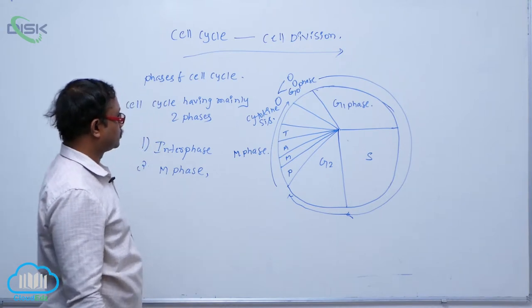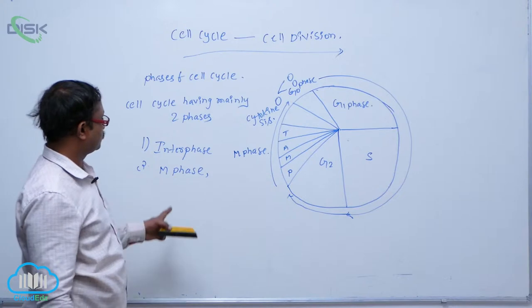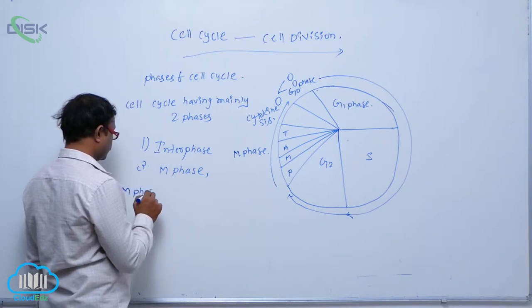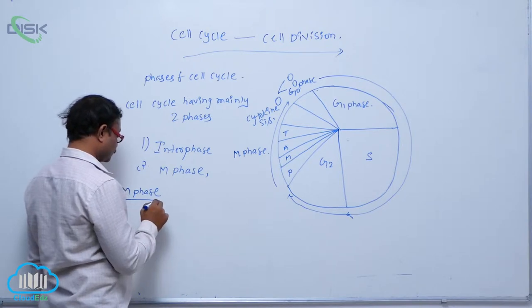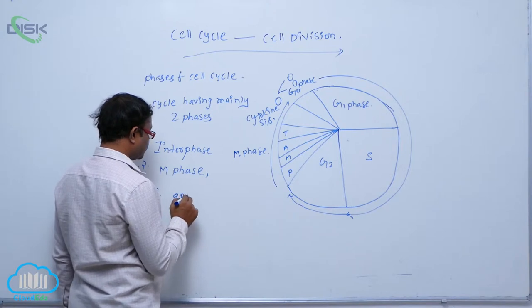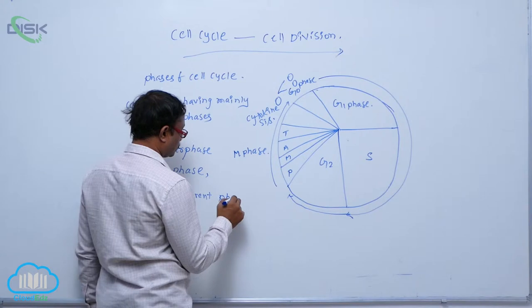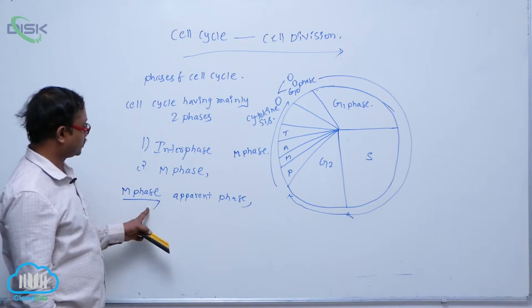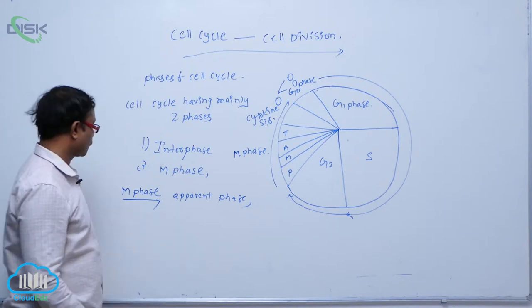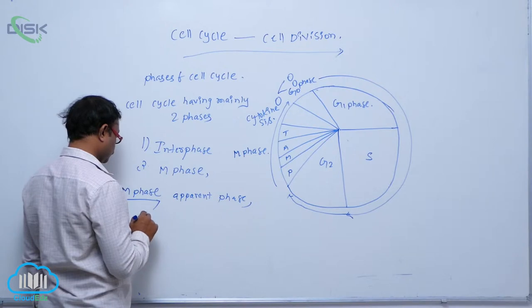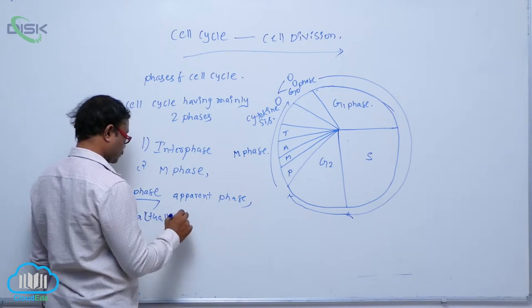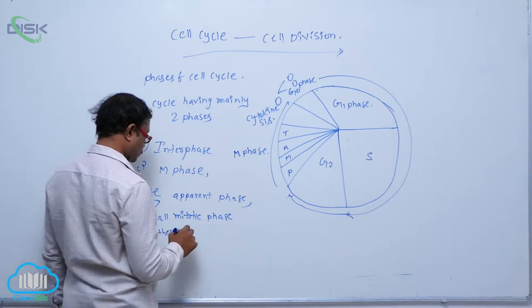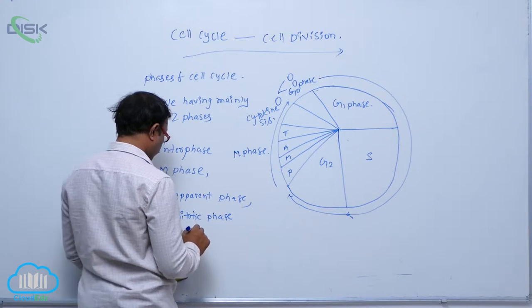Generally, the cell cycle has mainly two phases. The first one is the interphase and the second one is the M phase. The M phase is also known as the apparent phase, as it is clearly visible in living organisms. It is the actual mitotic phase in which karyokinesis occurs.